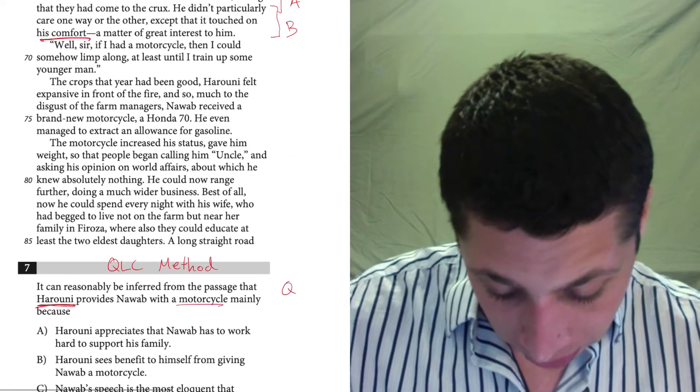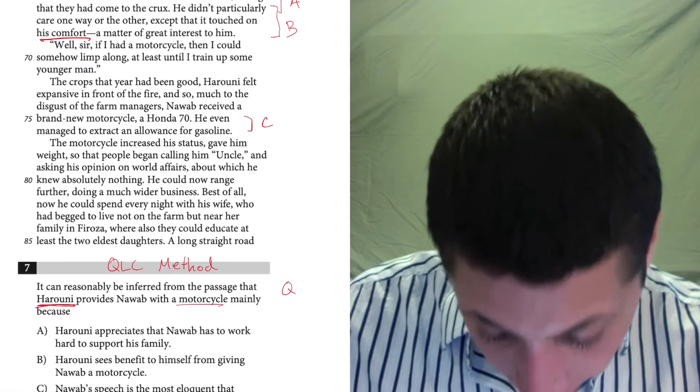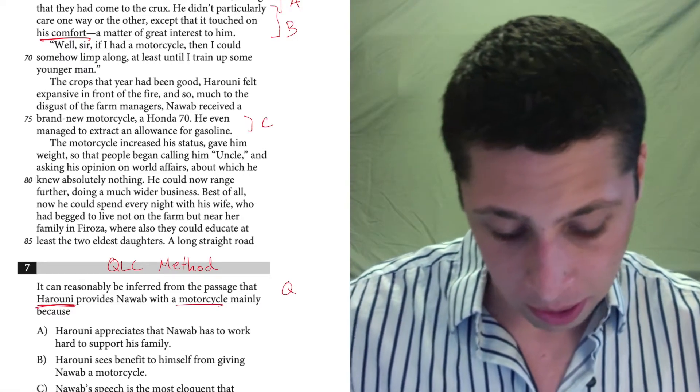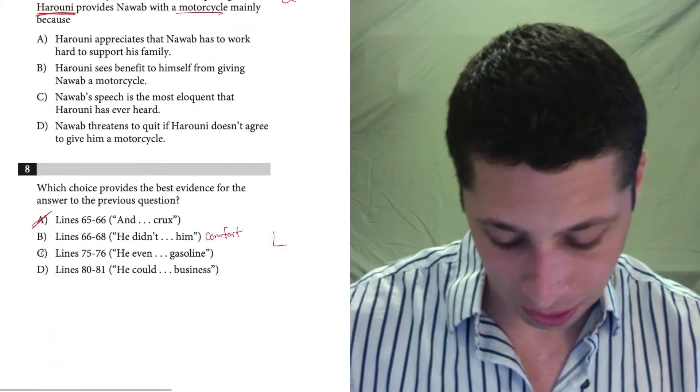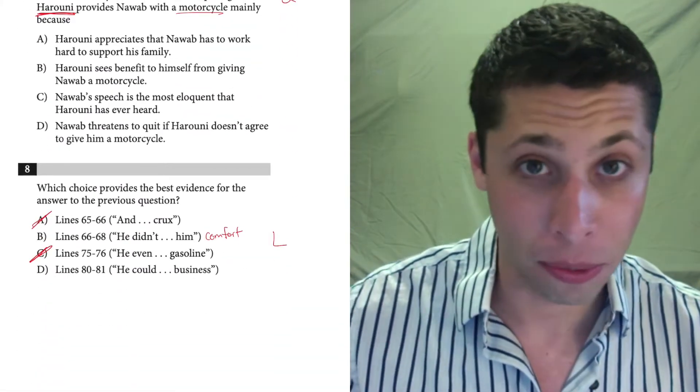C, 75 to 76, he even managed to extract an allowance for gasoline. Okay, well that has nothing to do about Haruni's reasons, that's just something else that Haruni gave him, gave Nawab, so that doesn't help.